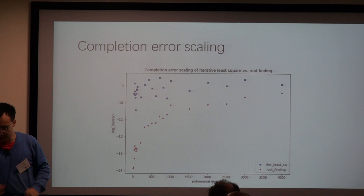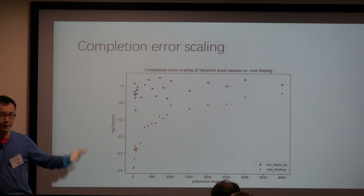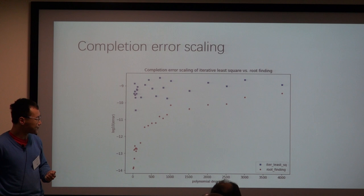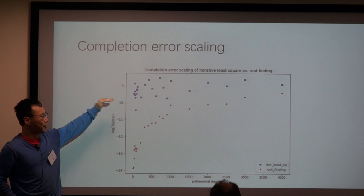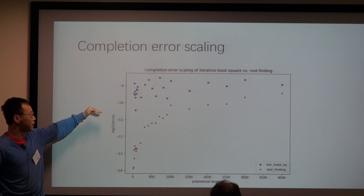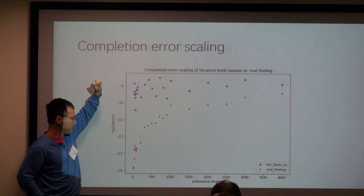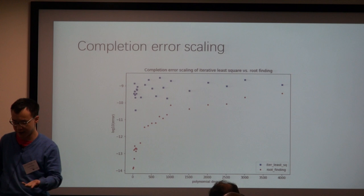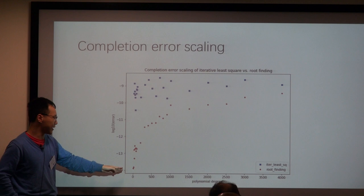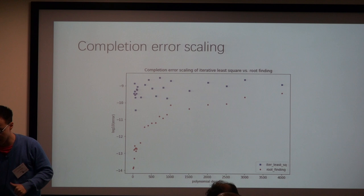This is the time scaling for the completion part. And what about the error scaling? So again, the red dots are for root finding and the blue dots are for our iterative method. One thing I should explain here is why the blue dots are above that line. That is because it's an iterative method and we set the ending condition to be that the error is below 10 to the minus 8. So it always ends when it crosses the 10 to the minus 8 line, which is here. Whereas the root finding method that we use, the NumPy package, does root finding up to double precision. So it actually has an error scaling. So much for the completion part.